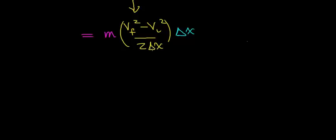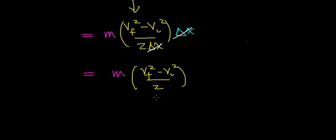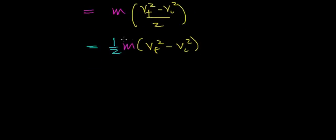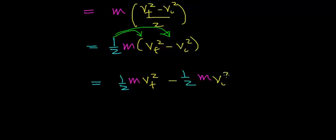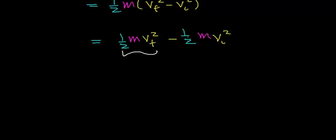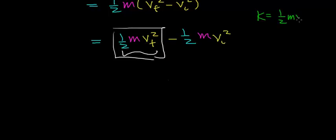We can simplify by noting the delta x terms cancel. This gives work equals mass times (vf² − vi²) divided by 2. Bringing the one-half out front: work equals one-half·m·vf² minus one-half·m·vi². Distributing the one-half·m term to both velocity terms, we get one-half times mass times final velocity squared, minus one-half times mass times initial velocity squared. This quantity — one-half·m·v² — is defined as the kinetic energy of an object.